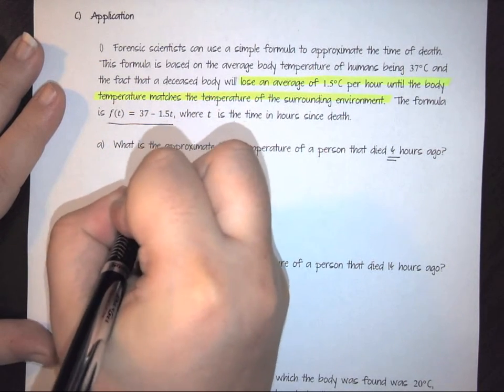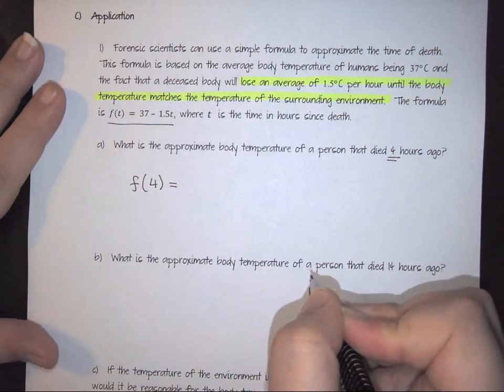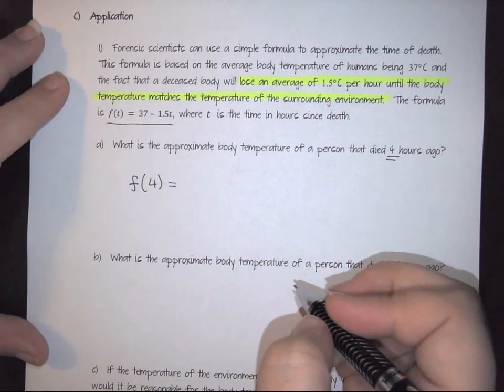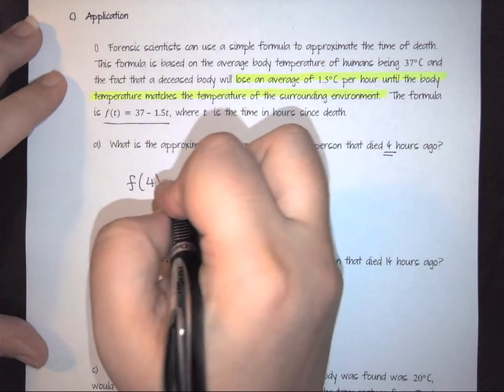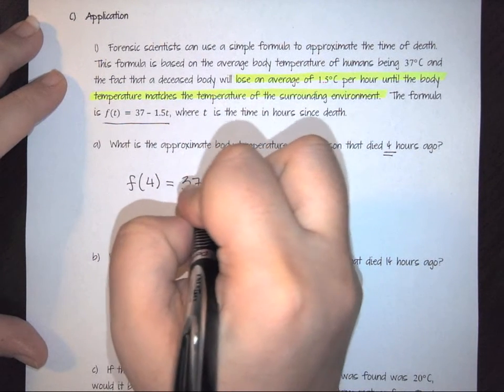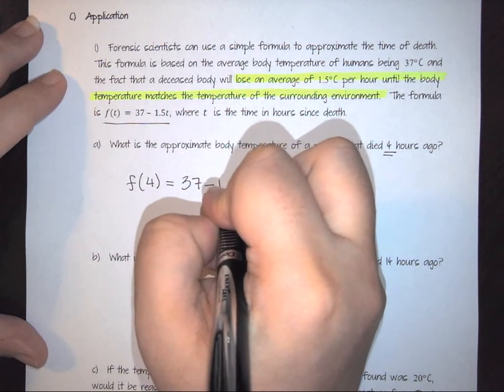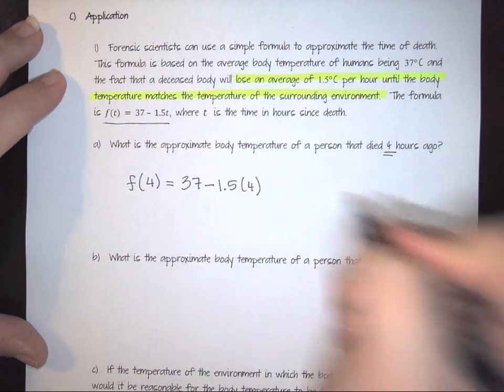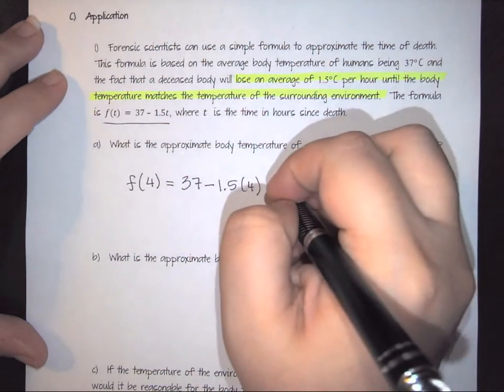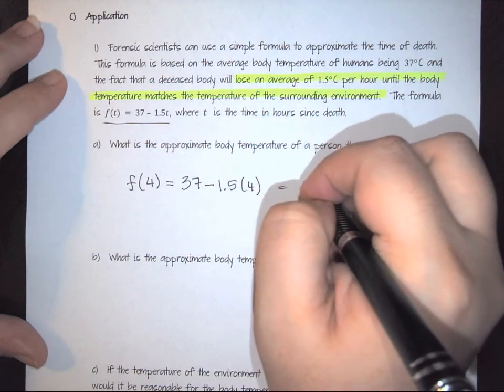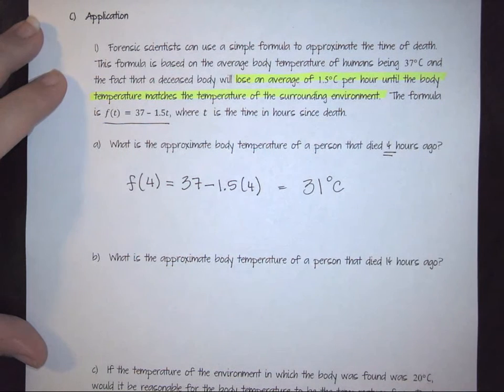So we're looking at four hours. In other words, we're setting up f(4) is equal to, and then anywhere you have a variable becomes a four. So this is 37 minus 1.5 times four, and when we do that math we find out that that body temperature is 31 degrees Celsius.